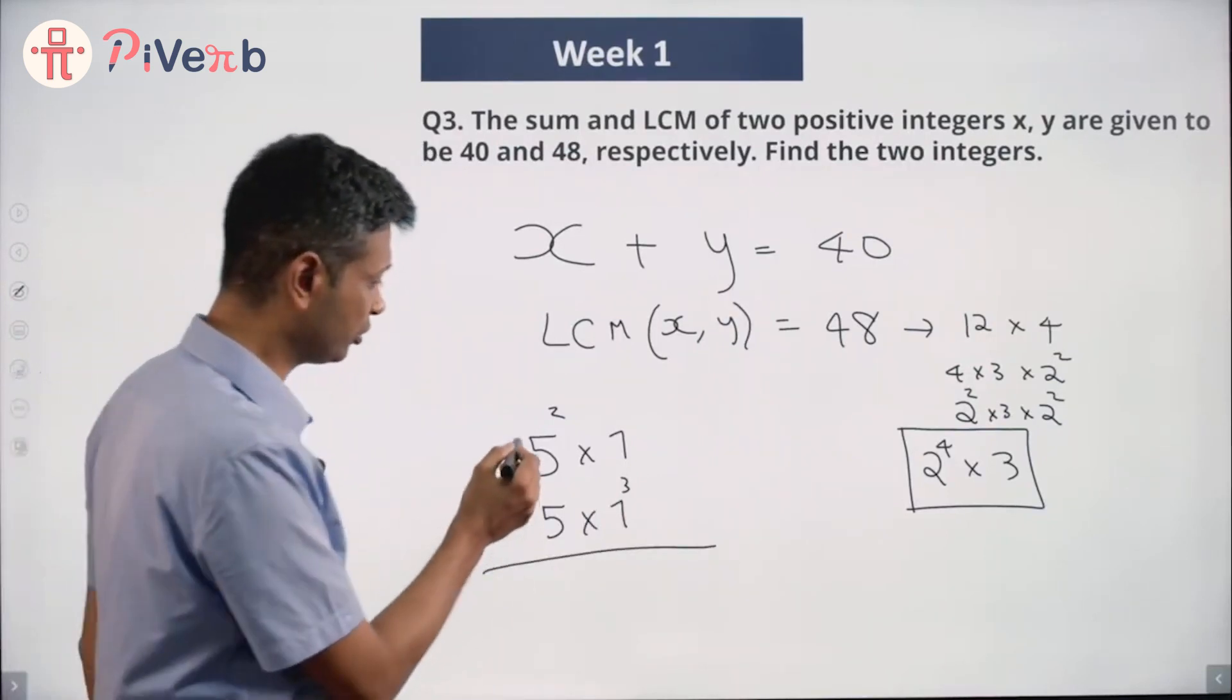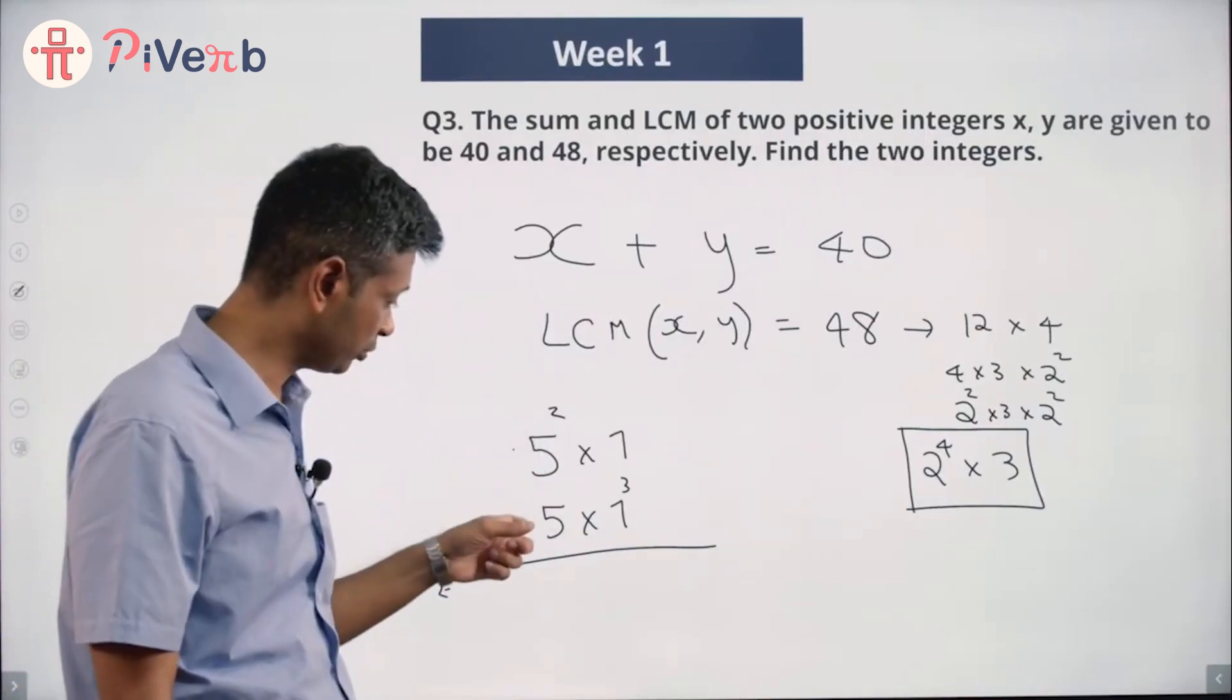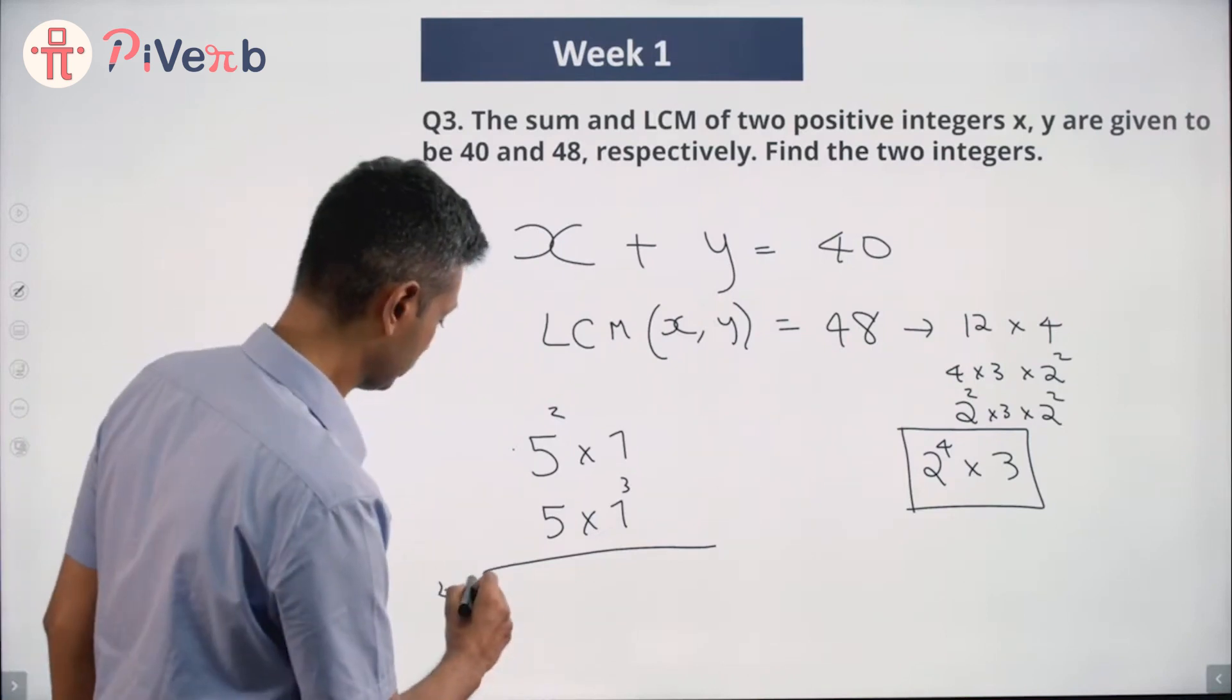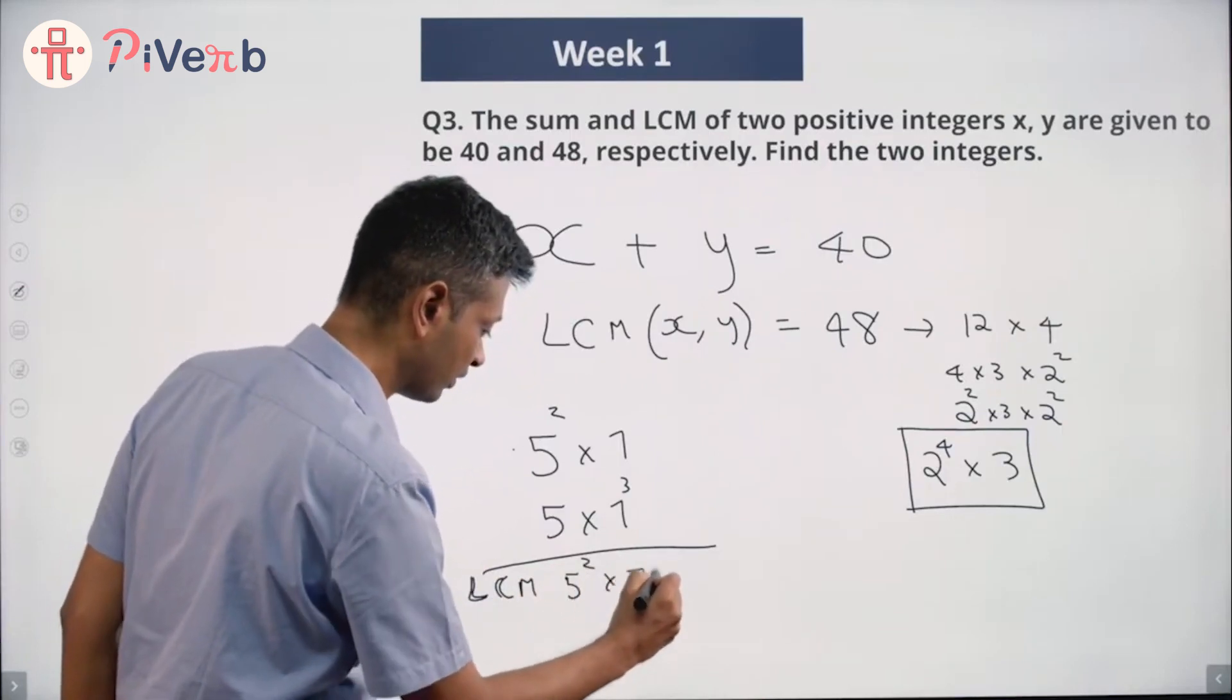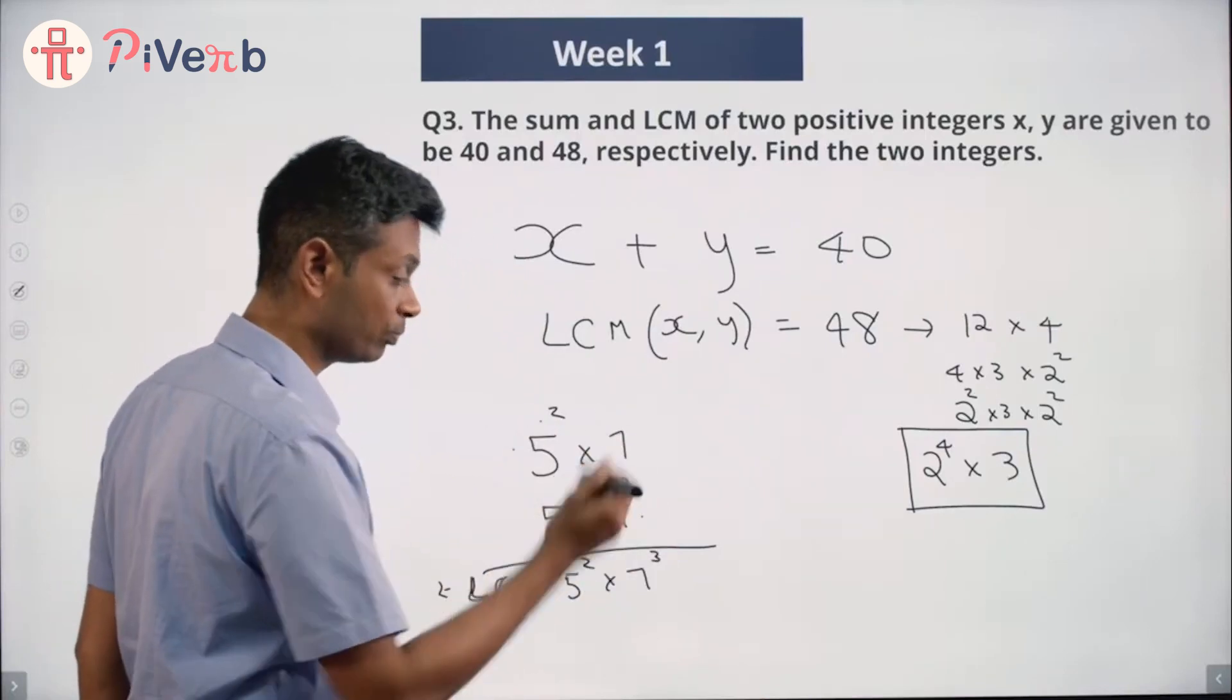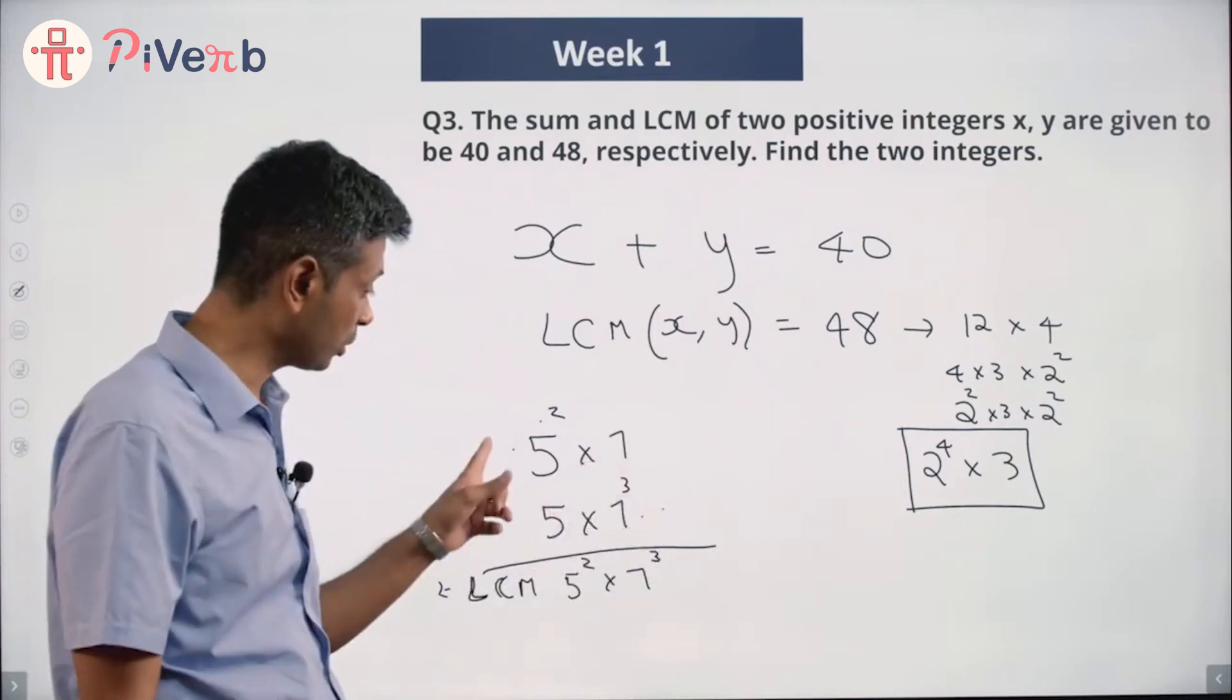What would be the LCM of these two numbers? I want my number to be a multiple of this, so it should have 5 squared and 7. I want my number to be a multiple of this, so it should have 5 and 7 cubed. The LCM should be 5 squared into 7 cubed. It should be 5 squared; it should be 7 cubed. If it did not have 7 cubed, it won't be a multiple of this. If it did not have 5 squared, it won't be a multiple of this.